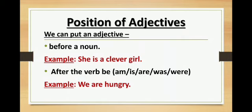Now, positions of adjective. We can put an adjective before a noun and after the verb be — that is, am, is, are, was, were. For example, first: she is a clever girl — here the adjective is placed before the noun. Second: we are hungry. In the first example, we have put the adjective before the noun. Girl is the noun and clever is the adjective.